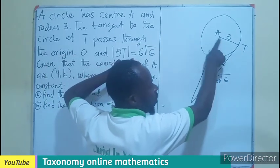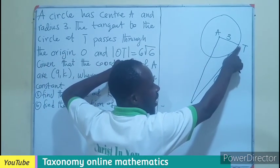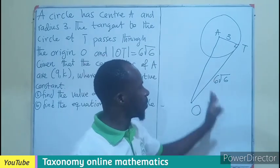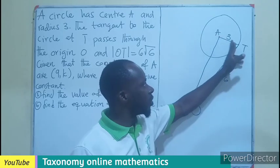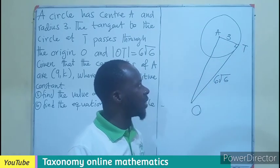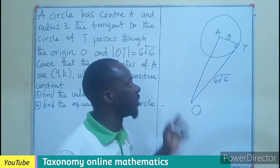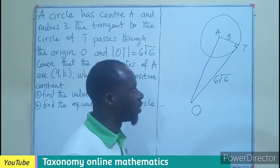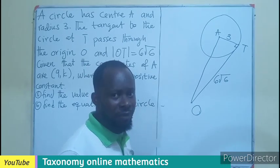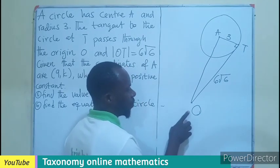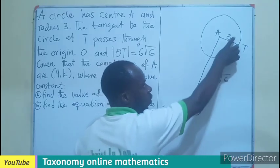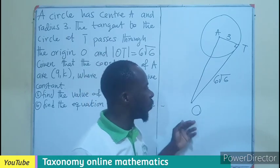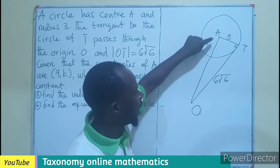But I can complete this diagram to have a triangle. And we know that a radius touches a tangent at a right angle. The moment a radius touches a tangent, it forms a right angle triangle. So this becomes a right angle triangle, where we can use the principles of Pythagorean theorem to find the length of OA. Since we know 3 and we know here, we can be able to find the value of K.